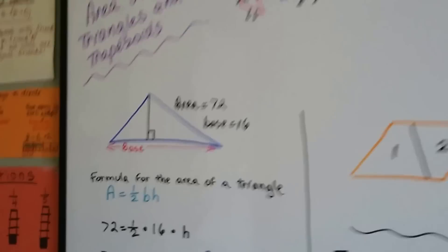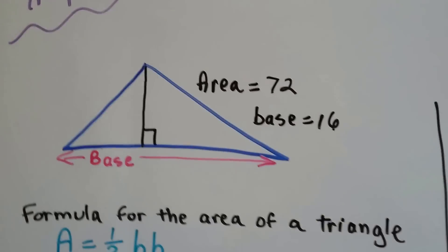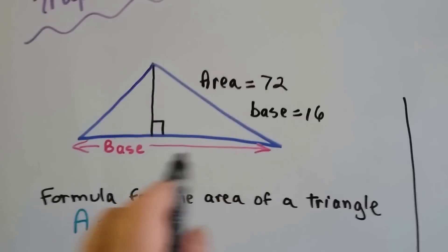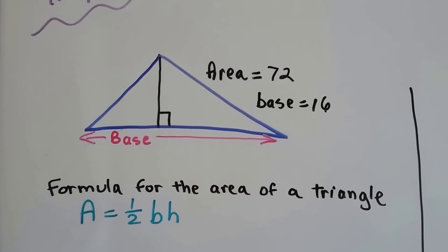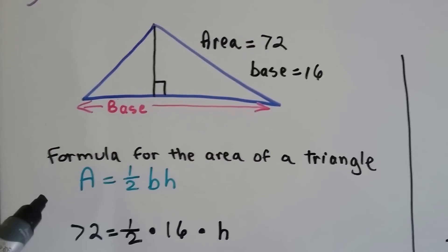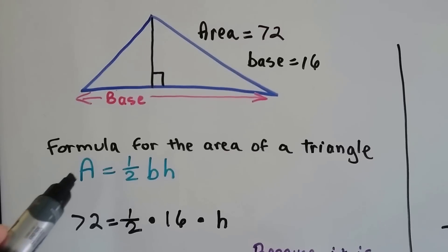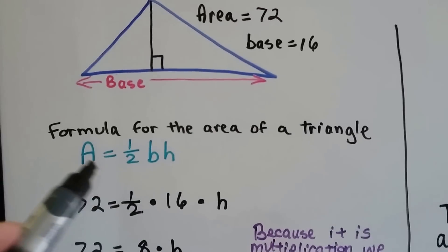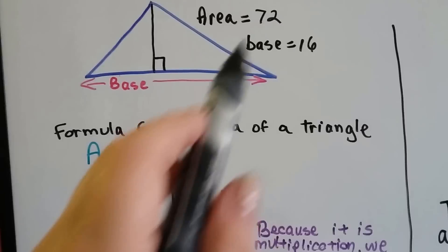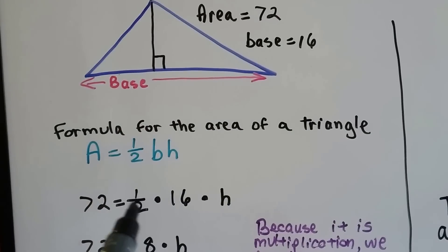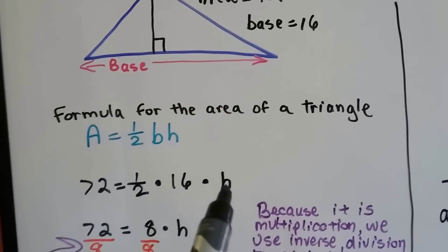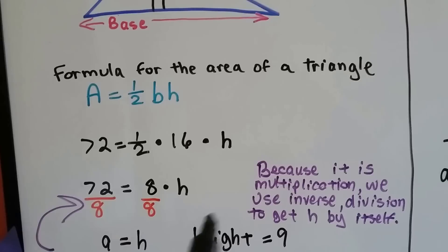Take a look at this blue triangle. If the area is 72 and we know that the base is 16, would we be able to find the height? The formula for the area of the triangle is A equals half bh, so the area is equal to half the base times the height. We know the area is 72, so it's equal to half of 16 times h.